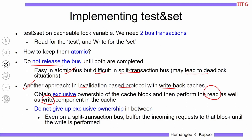In a split-transaction bus, suppose you have the block in exclusive access, finish the read, but before you do the write, a new request from another process comes for the same block. We do not relinquish the block because this is an atomic instruction we want to execute. Any incoming requests for the same block onto the bus need to be buffered — you buffer the request, finish your write, then service that request. This is how we maintain atomicity of the test-and-set instruction.